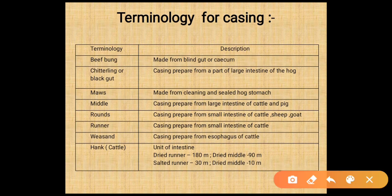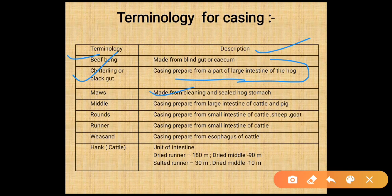Terminology for different types of casings: casings made from the blind gut (cecum) are known as beef bung. If casings are prepared from part of the large intestine of hog, they are known as chitterling or black gut. If casings are made from a cleaned and sealed hog stomach, they are known as maw. Casings from the large intestine of cattle or pig are known as middle.